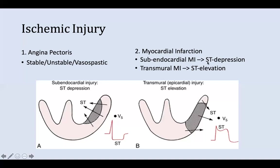The vasospastic or Prinzmetal angina is due to a spasm constricting the artery — it may occur at rest or in a circadian manner. Myocardial infarction is caused by occlusion of the coronary artery by either a thrombus or a ruptured atheroma. The two types are subendocardial myocardial infarction, which manifests as ST depression on ECG, and transmural myocardial infarction, which involves the entire layer of the myocardium and manifests as ST elevation.